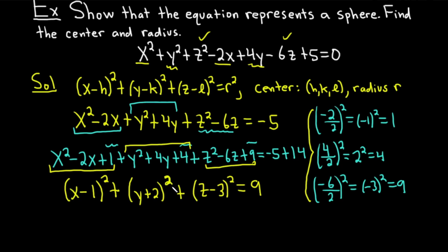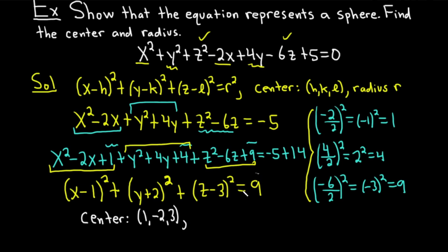We now have the equation in sphere form, which proves it represents a sphere. The center of the sphere is h, k, l — so we switch the signs to get 1, negative 2, 3. That's the center of our sphere in three-dimensional space. The radius: r squared equals 9, so r equals the square root of 9, which is 3.